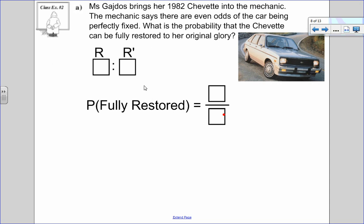So let's look at class example number two, I did it a little bit differently than they have in the textbook. We've talked about my Chevette before. I had a 1982 Chevette. It did not look as nice as this one in the picture. It was cream, but it had a whole bunch of rust spots all over the car. And I told you guys before the floorboard of the passenger side was not there. It was like a gaping hole. And people that came in my car had to put their legs on either side of the floor mat so they didn't fall through. So let's say that I bring my 1982 Chevette into the mechanic and the mechanic says there are even odds of the car being perfectly fixed. What is the probability that the Chevette can be fully restored to her original glory?